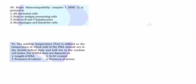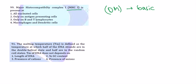The third question: where is major histocompatibility complex 1 (MHC1) present? This is again a very basic, direct question. If you know the basics of immunology, you should be able to answer it. MHC1 is found in all nucleated cells inside the body. Option one states 'all nucleated cells,' so option one is the correct option.